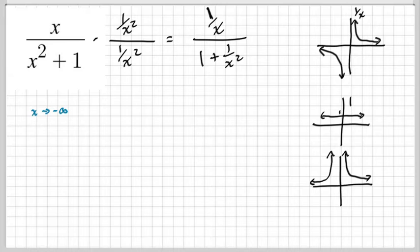Negative infinity. That's this way. What is that approaching? Zero. That's approaching zero. What is this one approaching? 1. And what is this one approaching as we go left? This one's approaching zero. That's right.